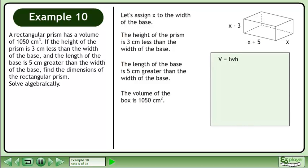The volume of the box is length times width times height. Replace the length with x, the width with x plus 5, and the height with x minus 3. Replace V with the volume of the box, 1050 cm³.